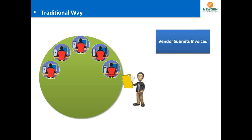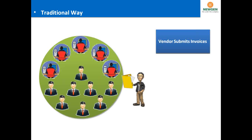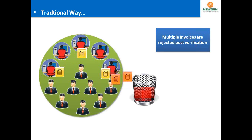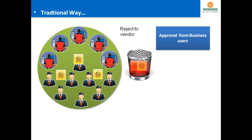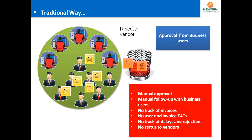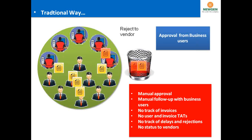For example, in accounts payable — the topmost process within the F&A space — the vendor comes in and submits the invoice at every branch location. Local approvers and managers handle those invoices manually, with manual approval interactions happening between the branch and vendor. The challenges include manual approvals, continuous follow-ups with business users, no tracking of documents or invoices, no invoice status management, and no track of delays or rejections.